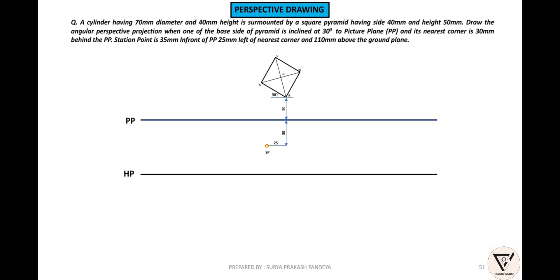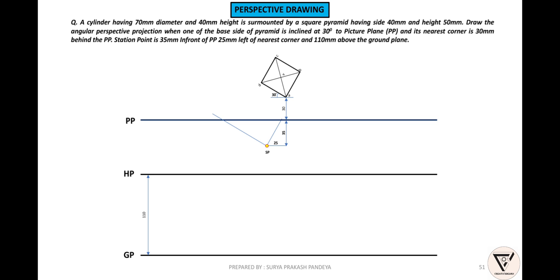The ground plane is 110mm and the station point is on the HP. The pyramid is parallel to the line and the picture plane intersect. The horizontal plane intersects, and the vertical line goes to the ground plane — this is the pyramid height. Extend to the vertex or the picture plane intersect — this is the vertical line to the ground plane.